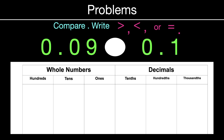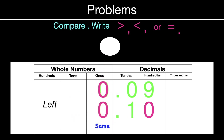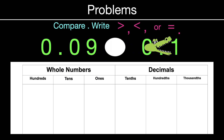Nine hundredths compared to one tenth. Line up our decimal places and put in your placeholder. Working from left to right — in the ones, that's equal. In the tenths, definitely not equal. One is greater than zero, which means one tenth is our greater number. Put in the hungry alligator, and this reads as nine hundredths is less than one tenth.